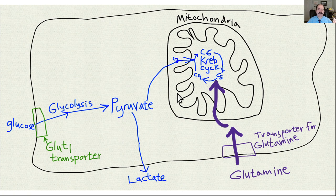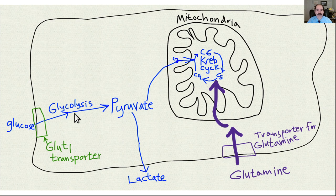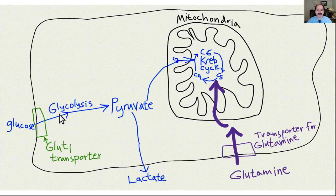Cancer tends to feed on glucose. There are increased glucose type-one transporters that are not insulin dependent — they're in the plasma membrane — and they basically suck up glucose like a vacuum from the blood. Cancer cells take up about 100 times more glucose than regular cells. Classically, with the Warburg effect, glucose is converted to pyruvate and then to lactate, which is expelled into the extracellular environment, making it acidotic.